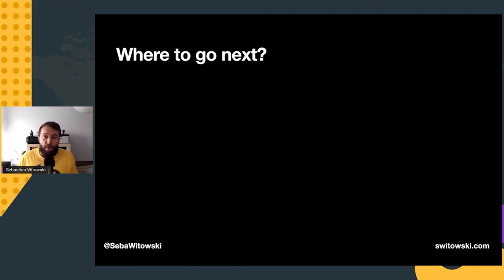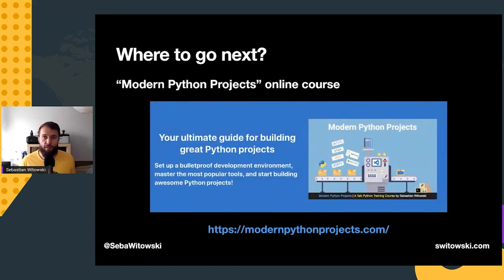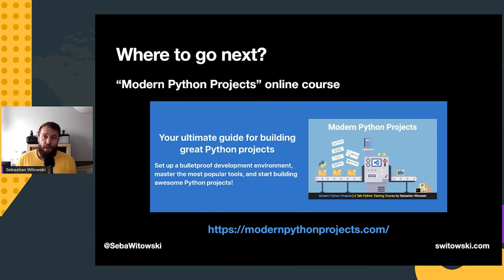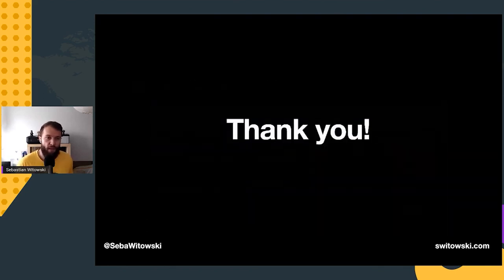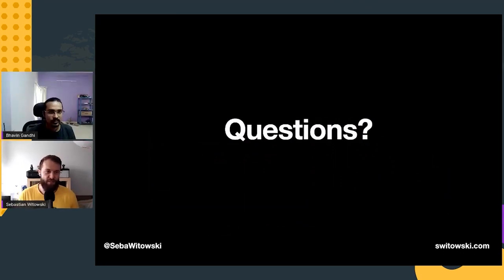Even though this is the end of my presentation, I realize I only scratched the surface of how to efficiently build Python projects. If you enjoyed this talk and want to learn more, I have an online course called Modern Python Projects where I talk about this and other tools to build a nice Python development setup. It covers writing tests, documentation, setting up continuous integration, examples of how to build a PyPI package, a CLI tool, how to deploy a Python application, and even a chapter on setting up VS Code to work with Python. You can check it out at modernpythonprojects.com.